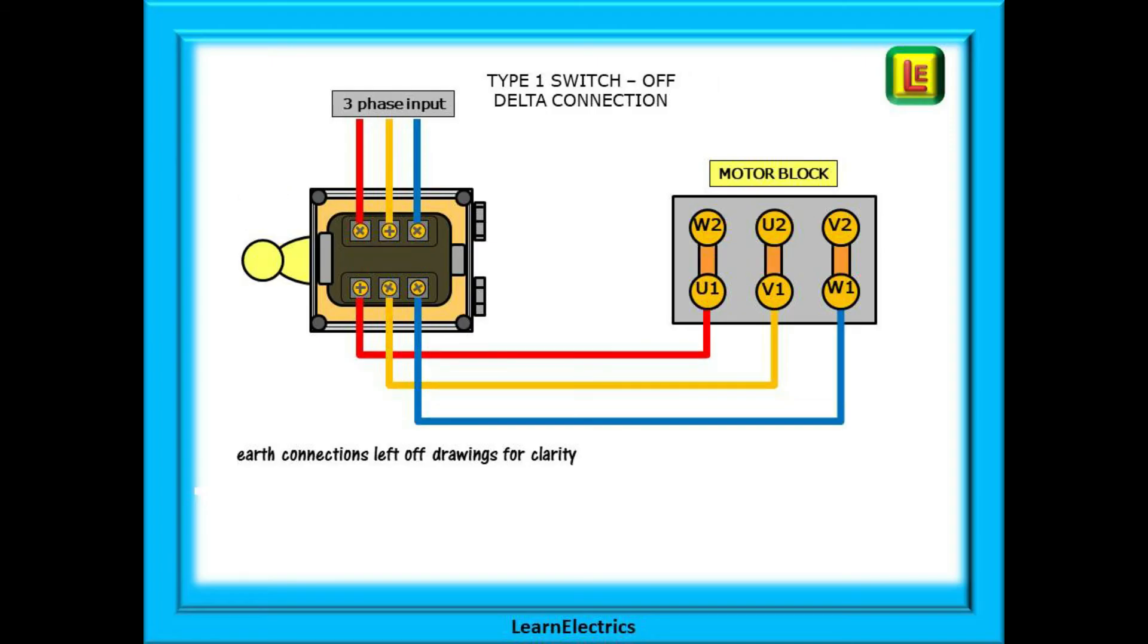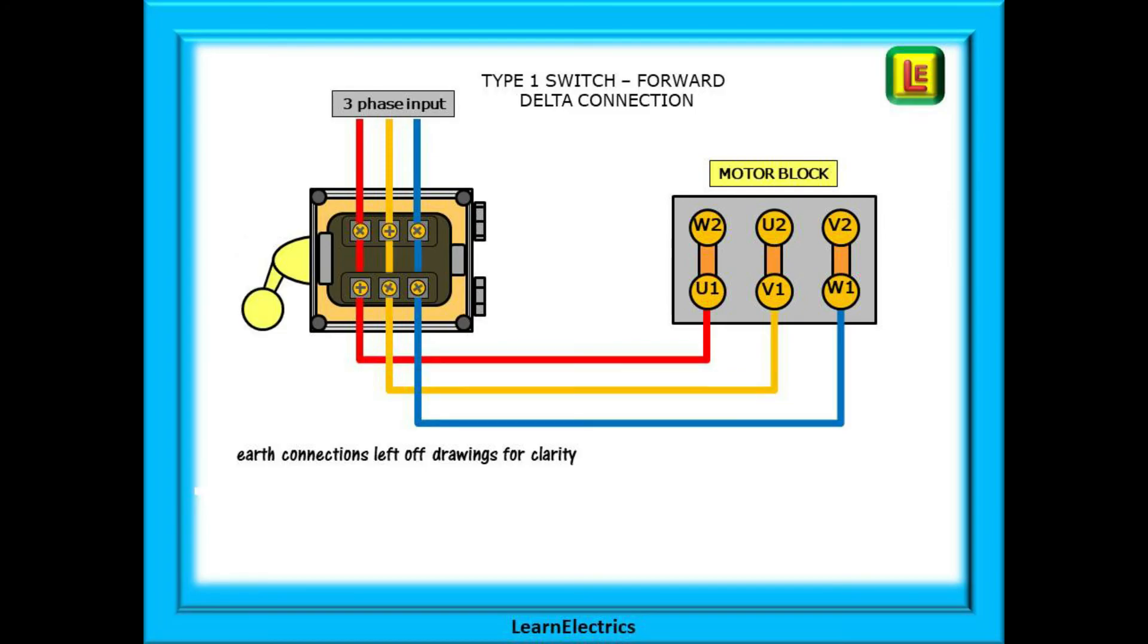Now look at the same type 1 switch with the motor configured as a delta connection. Nothing has changed at the switch, but the motor block links are in different positions. Do not alter how these have been set.